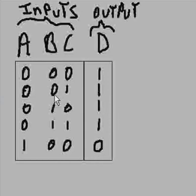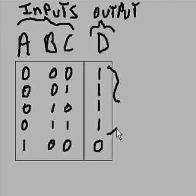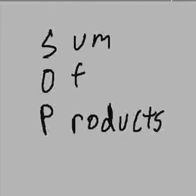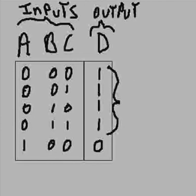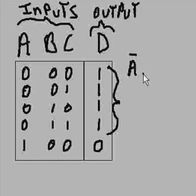I want to make a boolean expression that represents this truth table. So I'll choose the ones and make a sum of products expression. Here's a 1 — what makes a 1? Well, not A, not B, and not C.